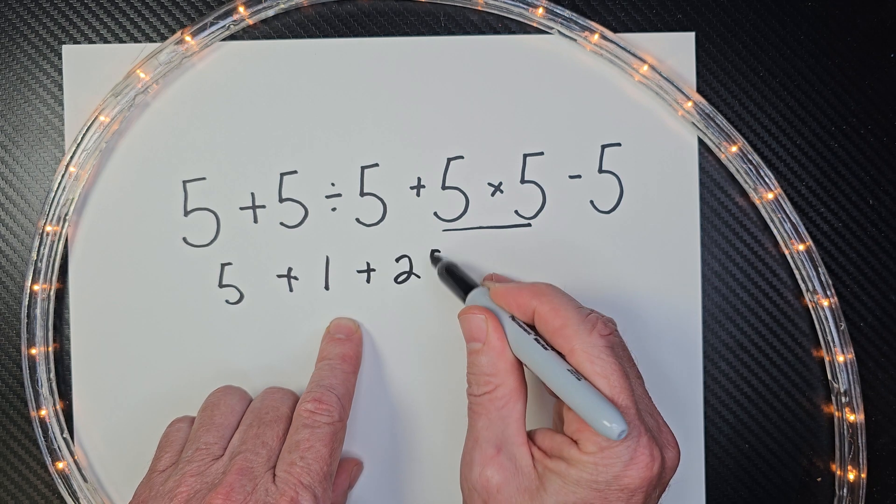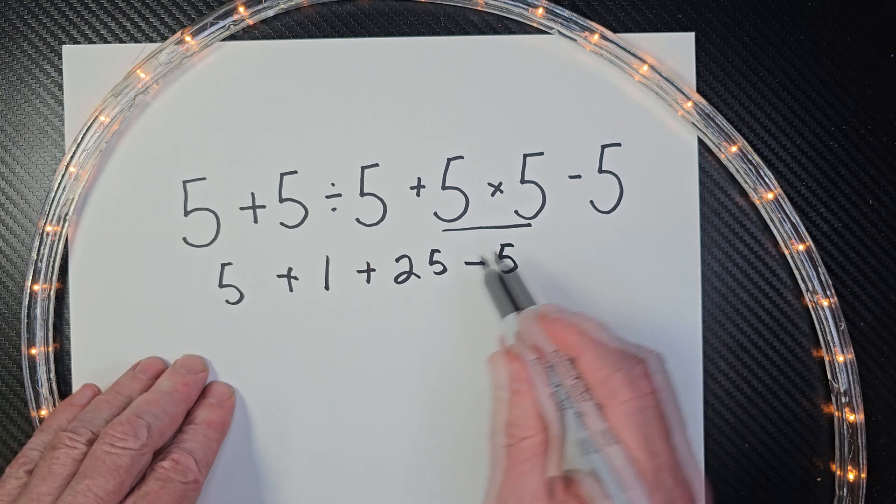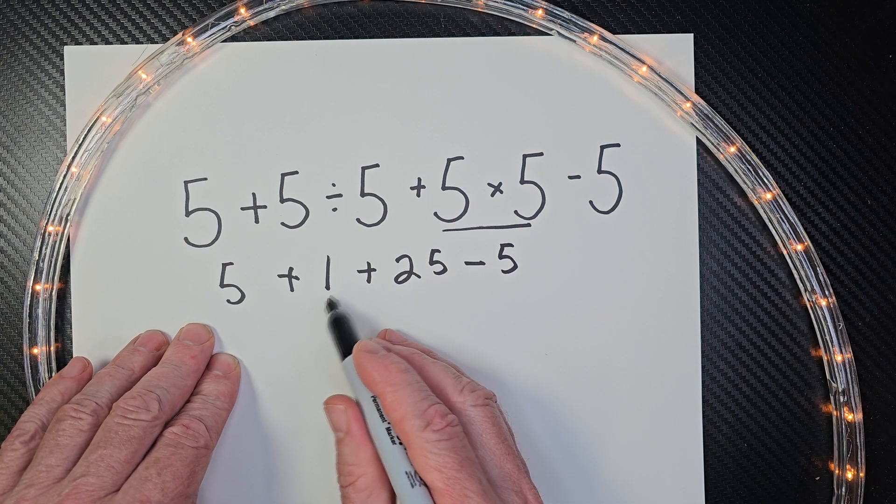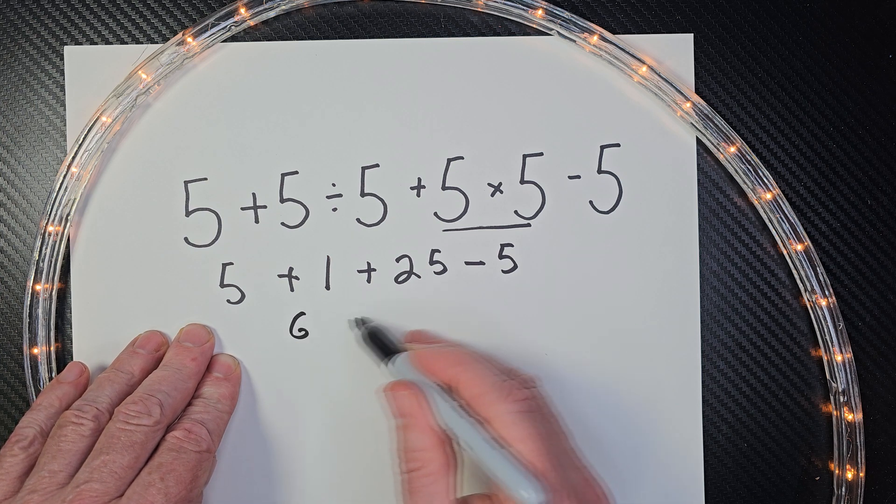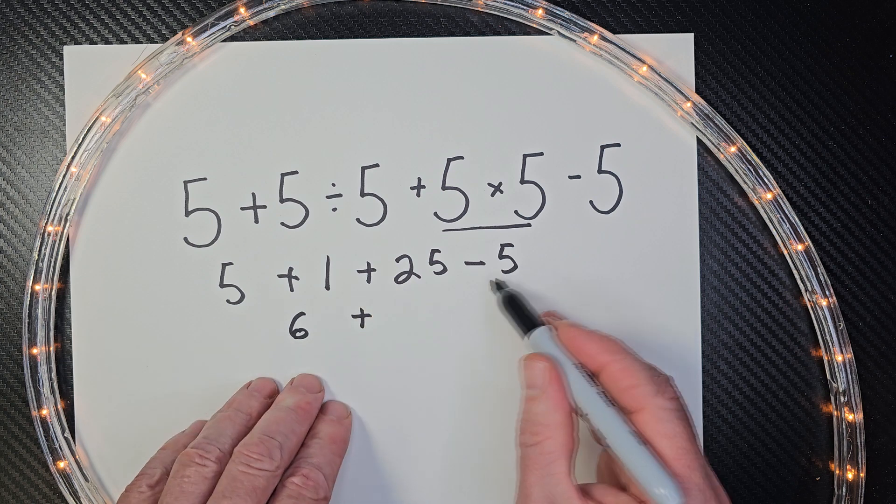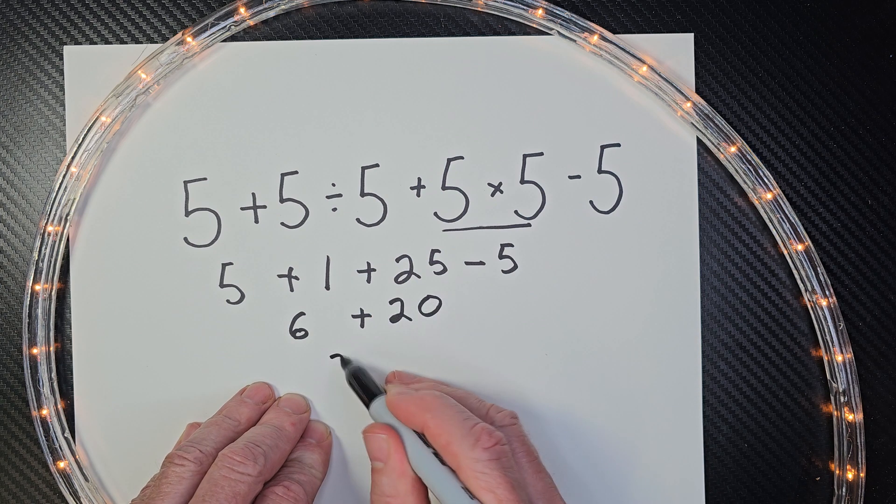All right, and then minus 5. So now we have this set up. Now we go from left to right. So 5 plus 1 would be 6, plus 25 minus 5 would be 20. And then we have 26.